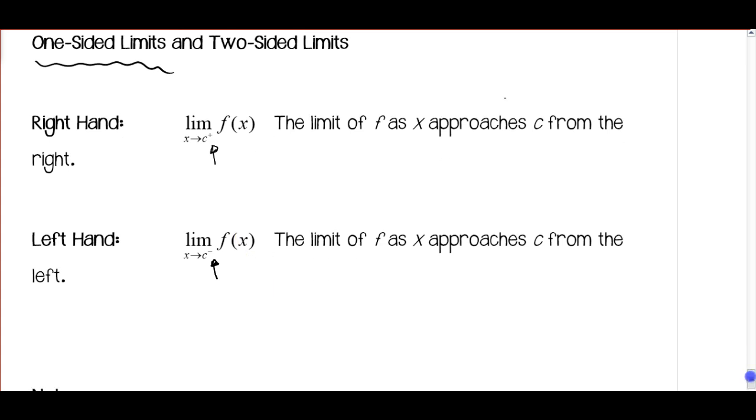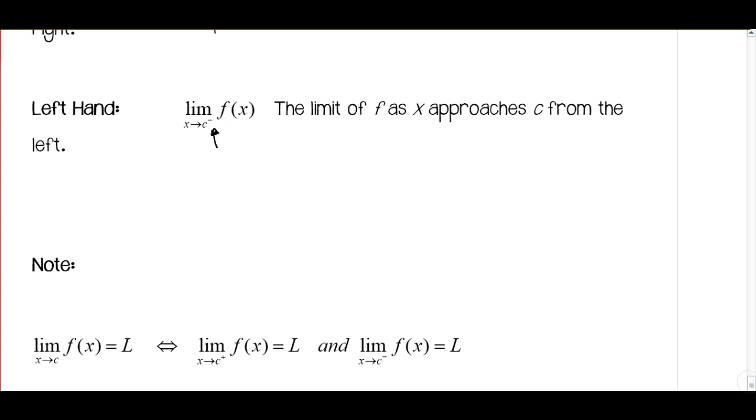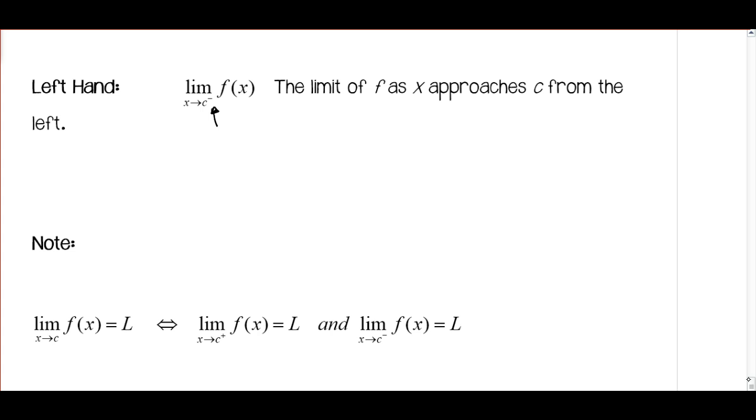So if there isn't a plus or a minus, then we're talking about approaching it from both sides at the same time, and we already talked about the fact that if it doesn't approach the same value from the left and the right, then there is no limit. However, if we're approaching it from the left or the right separately, then there could be a limit.